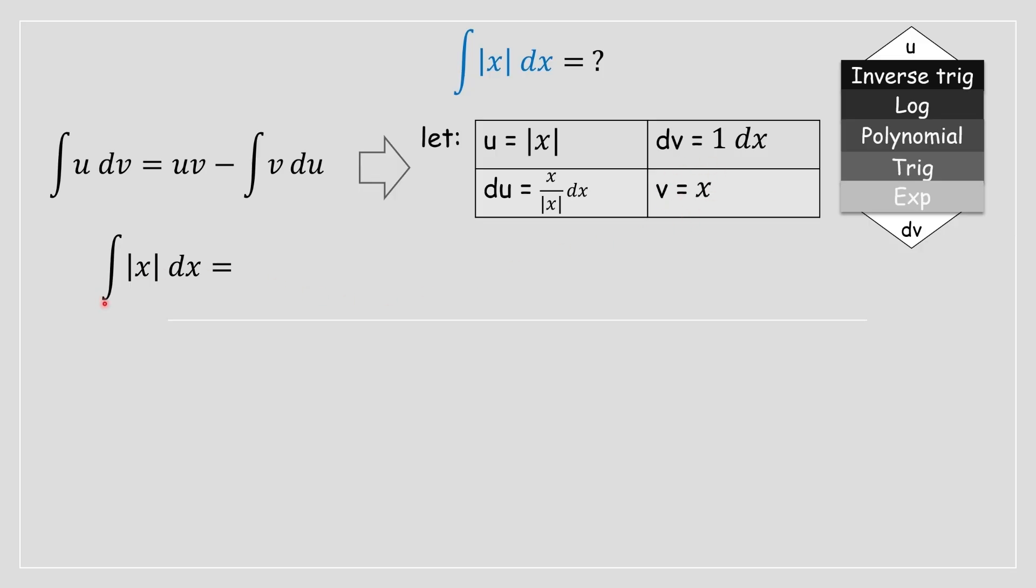We could then rewrite the formula—that's very important—as uv minus the integral of v du. We're going to substitute this inside this integral and what you are going to have is this. We're going to simplify this a bit further.